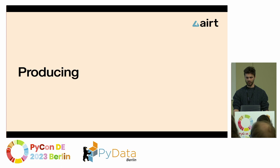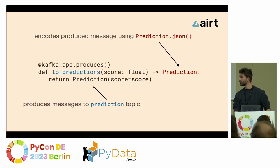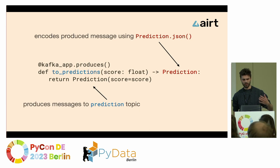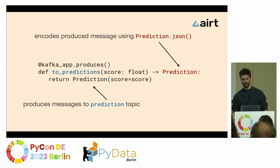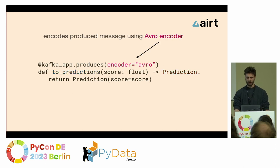Let's go through producing in the same way. We wanted to have a producer endpoint that looks like this, so we implemented it. The producer does all the background work: it connects your function to a topic, encodes the prediction into JSON, and as a side effect of calling your function, the return value is also sent to a Kafka topic. If you want to encode messages in any other format, we support Avro as a default, but you can always implement your own.